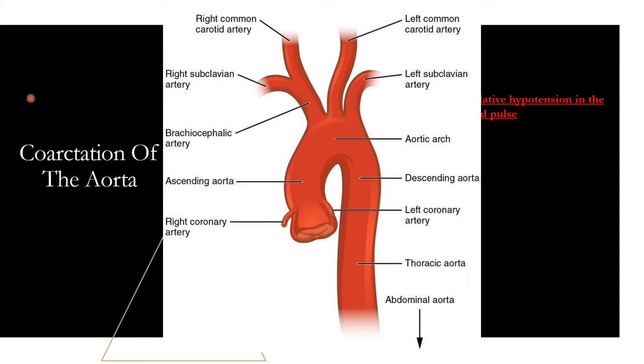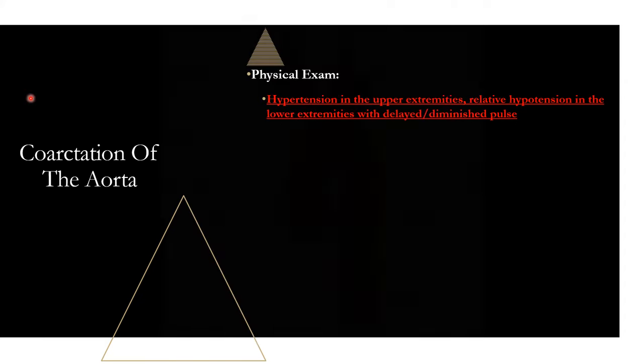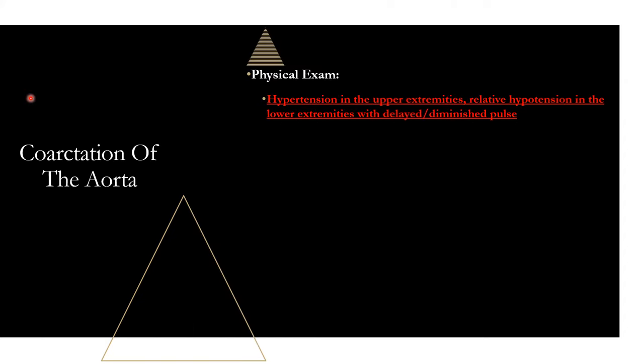You may also have a systolic murmur, but that is not nearly as important as the upper extremity hypertension with lower extremity hypotension finding. Do not forget this — it is a very high-yield physical exam finding for coarctation of the aorta.